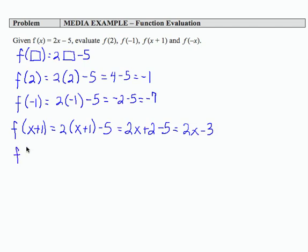And then finally, f(-x). Again, I'm going to put negative x in the box in parentheses here, minus 5. And then 2 times negative x is negative 2x. And then I subtract 5.